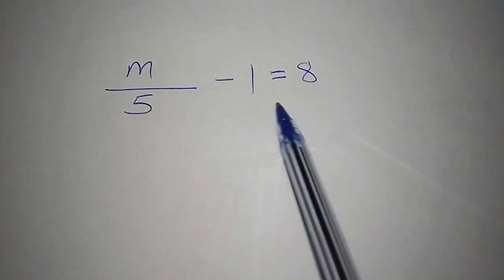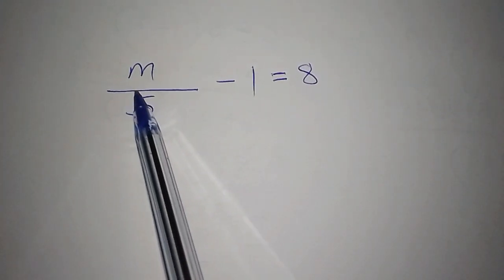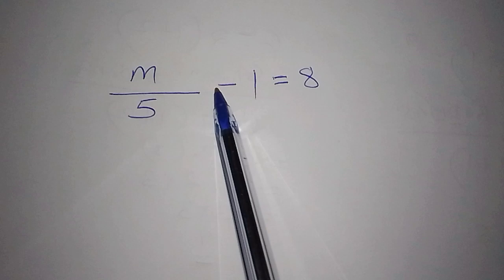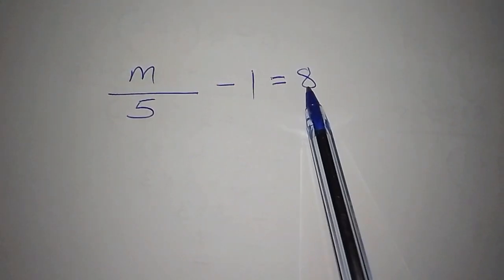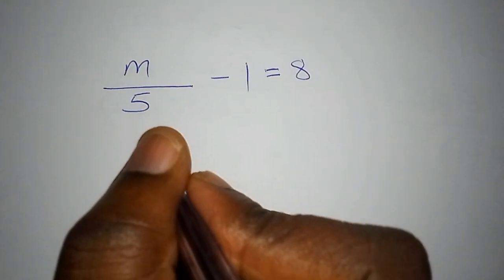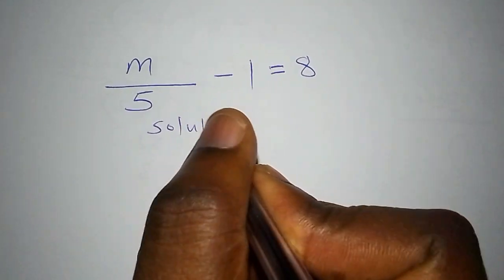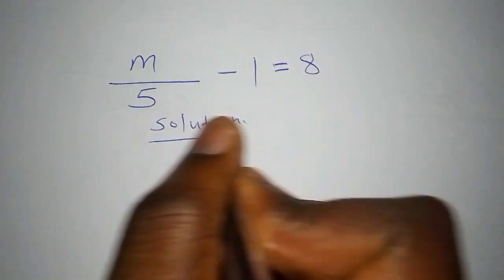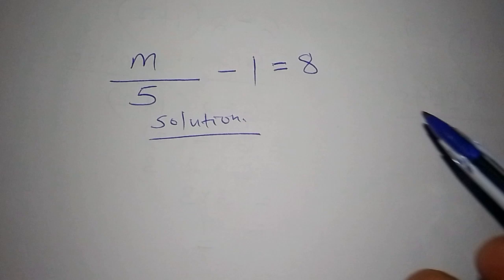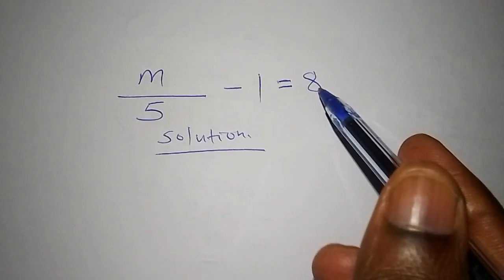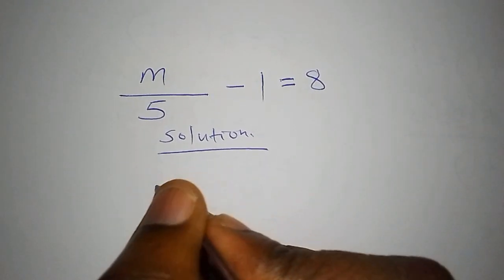Hello everyone, I want us to work out this math problem: m divided by 5 subtract 1 equals 8. The first thing that you're going to do, we're going to start with the solution. We're going to look at the way in which you can do this math problem very quickly.